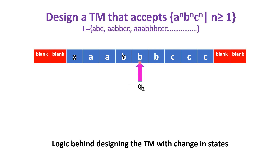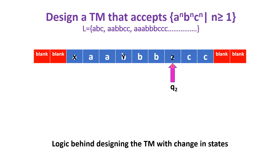Once we get the first B, replace B by Y, change the state from Q1 to Q2, and move towards the right until we get the first C. You can see here there is still a B — keep the input symbols as they are and just go on moving right until we get a C. Once we get a C, C is replaced as Z. Change the state to Q3 and move towards the left. This completes one set of A, B, C replacing as X, Y, Z.